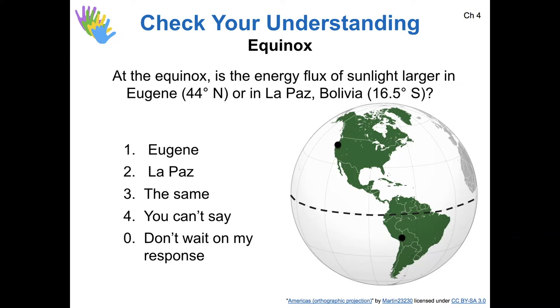The sun is directly overhead the equator at the equinox. So of anywhere on Earth, the equator would experience the greatest solar flux on the equinox because the sunlight would be most directly perpendicular. It would be coming down exactly perpendicular at the equator. So Eugene versus La Paz, which one of these will have the sun closest to zenith on the equinox and why?